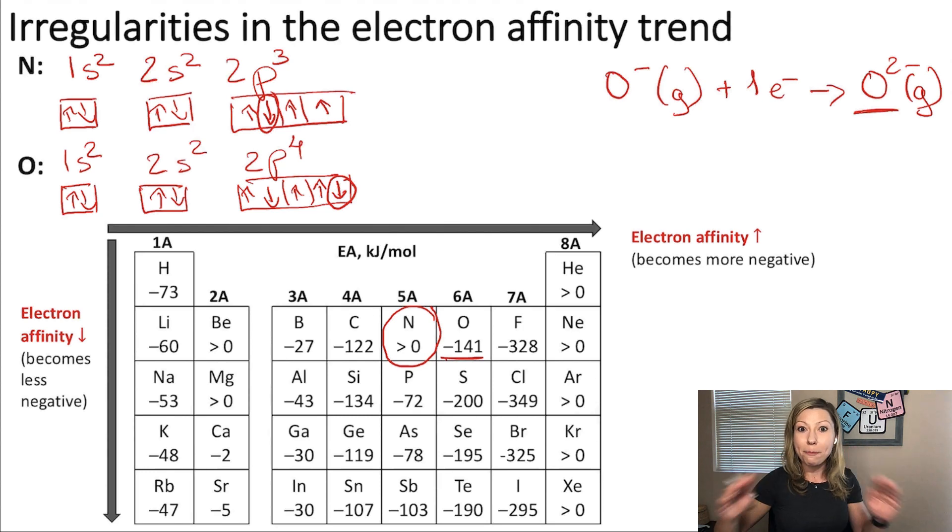Okay. Bottom line is there is a lot of irregularities in the electron affinity trend. Most of them can be explained by the electron configurations. Generally, just think about this. When we have a fully filled sub-level, it's going to be very, very stable. And the next most stable ones are halfway filled sub-levels, just as the 2p orbital in a nitrogen atom, without adding or subtracting an electron. So, in those cases, you are going to see irregularities. All right. I hope this all made sense. See you in the next video.